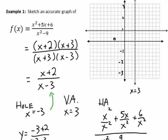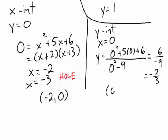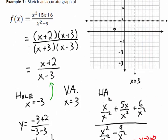Now we determine the intercepts. For the x-intercepts, the candidates are x = -2 and x = -3, but since x = -3 is already a hole, the only x-intercept is at (-2, 0). For the y-intercept, we set x = 0 in the original function and get 6 / -9, which reduces to -2/3. So the y-intercept is at (0, -2/3). We plot both of these points on the graph.